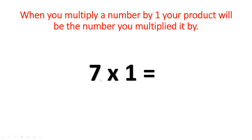So in this number sentence, I'm multiplying seven by one. My product or my answer will be seven. So when you multiply one by a number, the answer or the product will be the number you multiplied by. If I multiply 300 by one, my product will be 300. If I multiply two factors such as 35 and one, my product or answer will be 35.